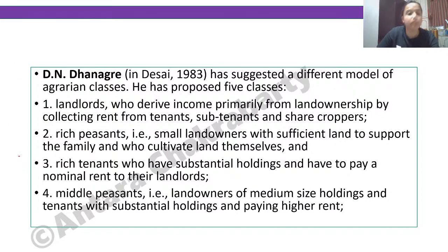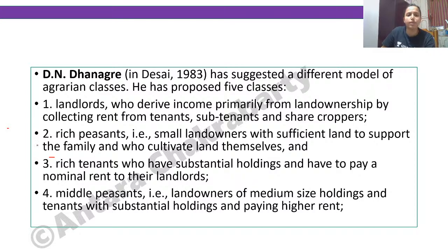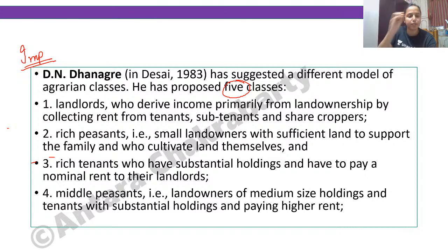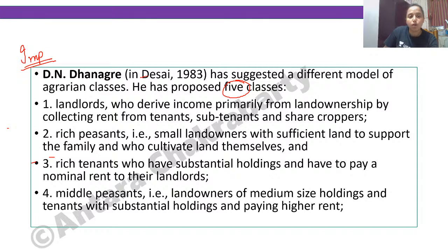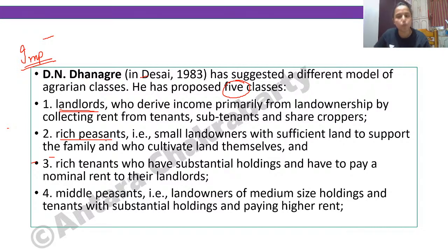The last thinker for today is DN Dhanagare. His classes are the most detailed and complicated. He is an Indian scholar who has done extensive work on agrarian movements. He gave five classes of peasantry, and within those five classes he has further subdivisions — but you only need to remember the five major classes.